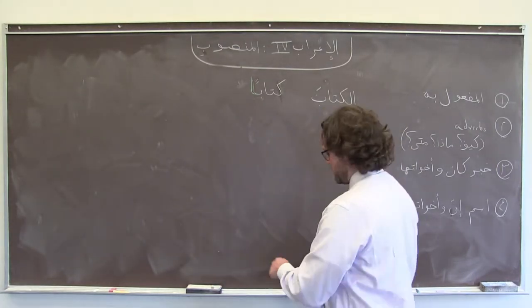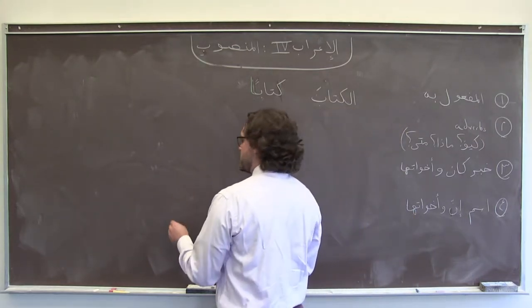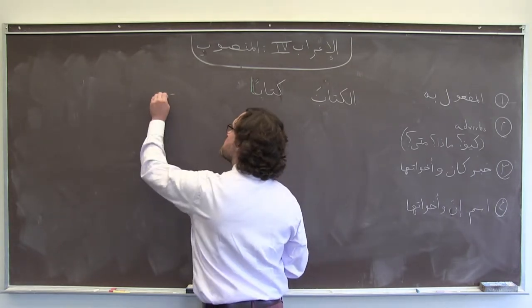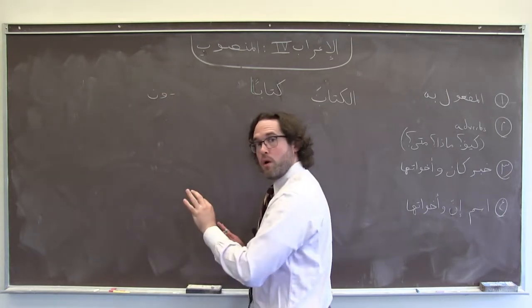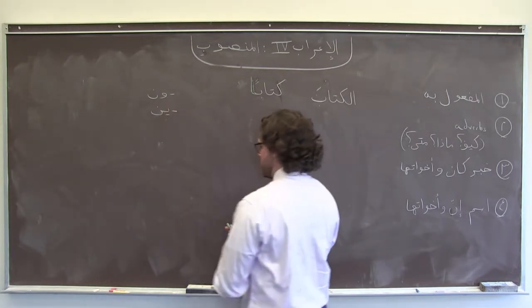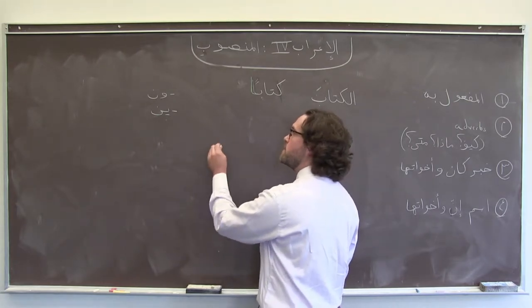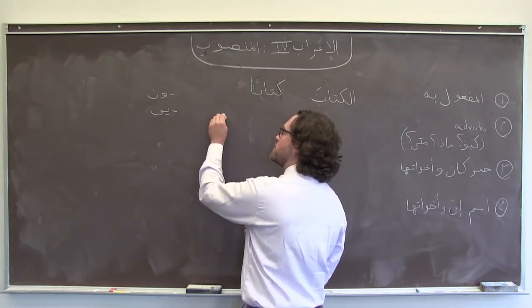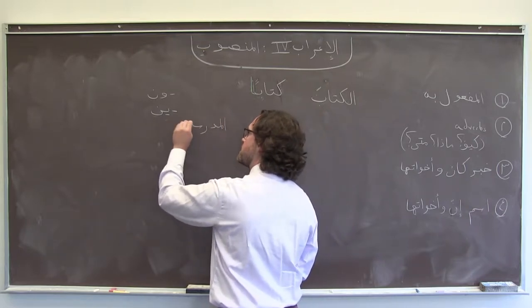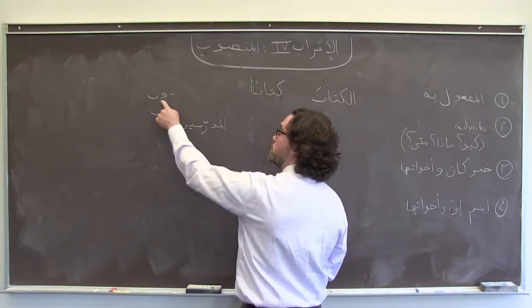In regular plurals — regular masculine plurals — instead of the أُون ending that we see in مرفوع, our default, we add ين. So in منصوب, if I wanted to talk about the teachers, I would say المدرسين, not المدرسون.